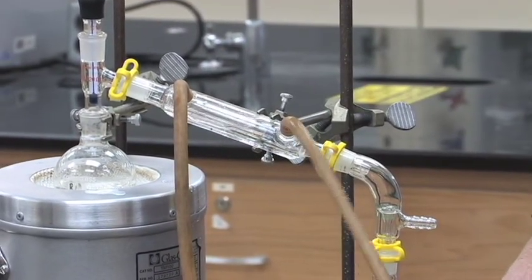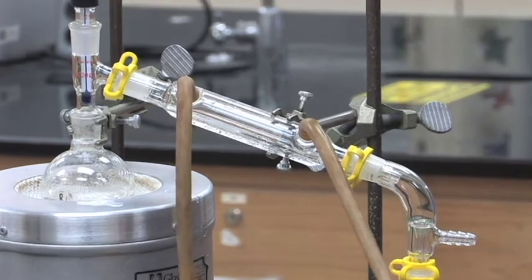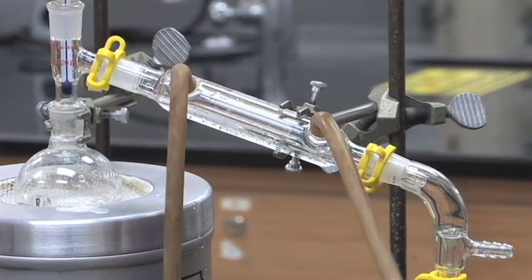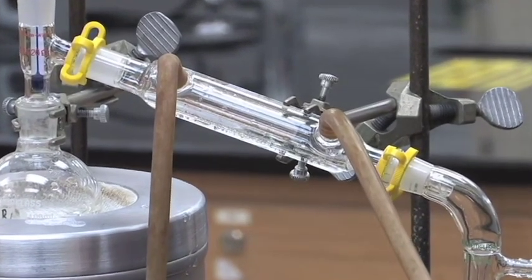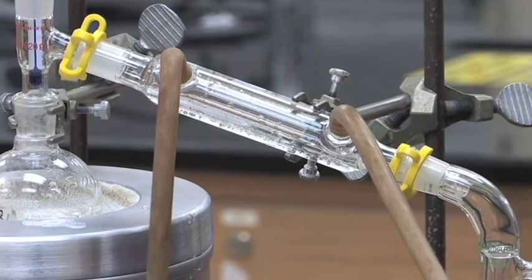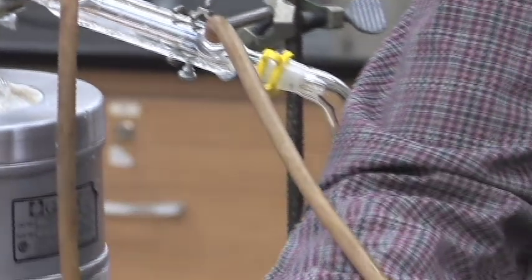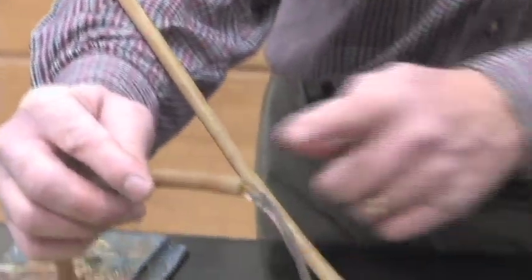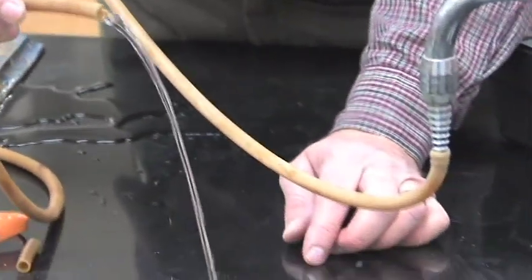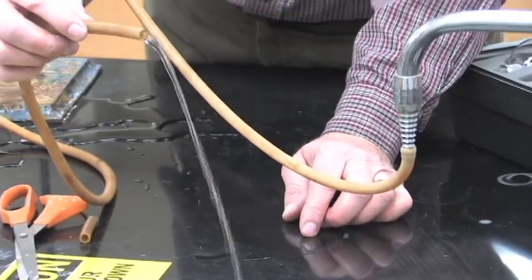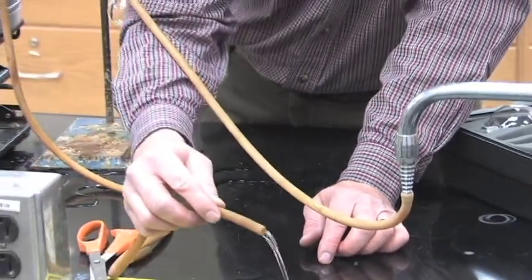But we turn the hose on, turn the water on at the outlet. And when you're using the water going through a distillation or a reflux, all you need is for the water to drip off from the outside end of the hose straight into the sink. You shouldn't be able to spray the water across the lab or you have it on too high.